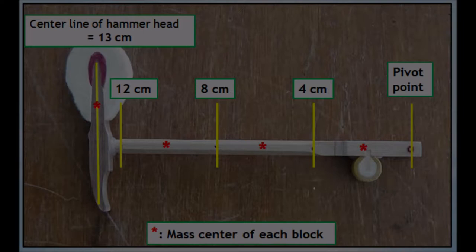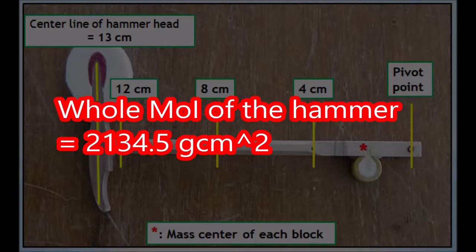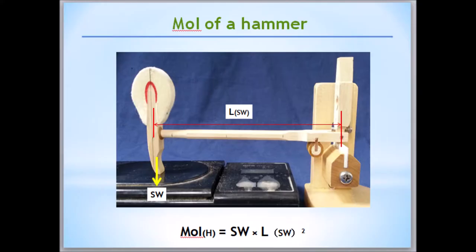Here is the calculation. Shank A part, the knuckle part, is 9. Shank B, second part, is 29. Shank C, third part, is 80. And the hammerhead has 2017 gram squared centimeter. So the whole moment of inertia of this hammer equals 2134.5 gram centimeter squared.